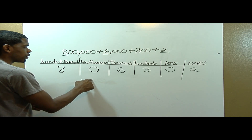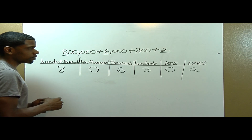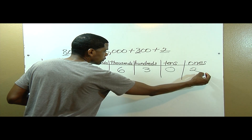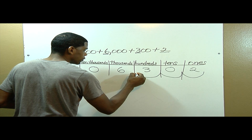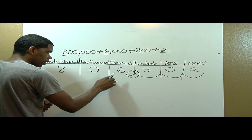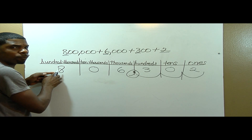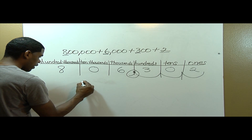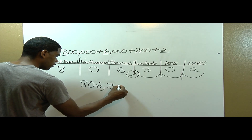Here is my expanded form number in my place value chart. What I need to do next is find out where to place my comma. I'll start from right to left and move over three places — one, two, three. This is where my comma will go. If I move three places again — one, two, three — the comma would be before the eight, so I don't need a second comma. Now I write my number in standard form: eight hundred six thousand, three hundred two.